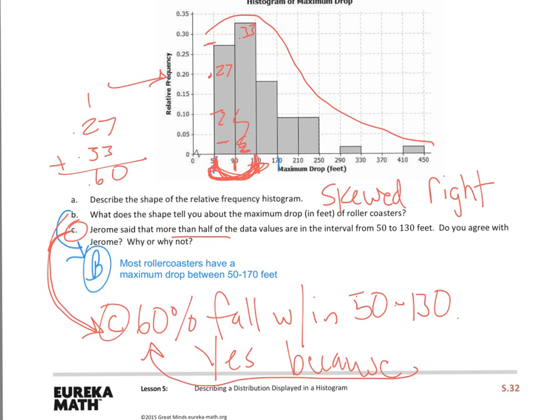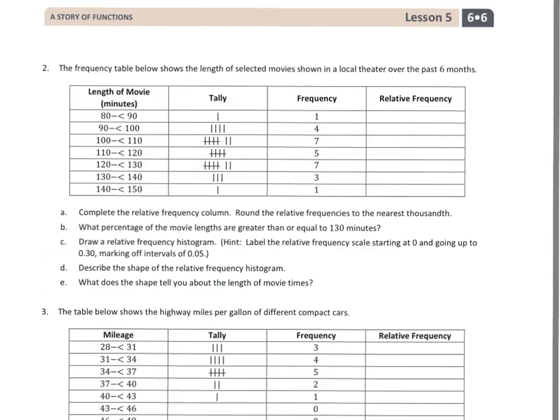Let's take a look at page two. Here we are on page two, and we have another frequency table here that shows the length of selected movies shown in a local theater over the past six months. So A says, complete the relative frequency column.